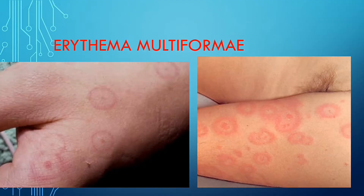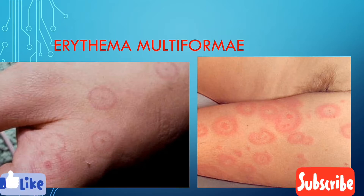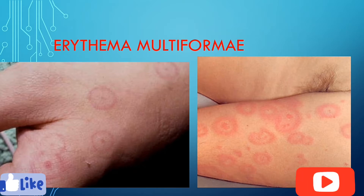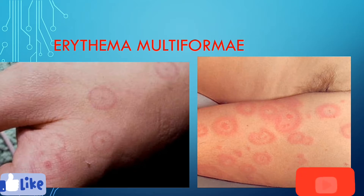Hello guys, today we are going to talk about erythema multiforme. This is a skin condition where there is a presence of ring-like lesions on the skin. 'Erythema' means red patch, 'multi' means many, and 'forme' means different shape — so erythema multiforme means many red patches with different shapes, mostly circular.